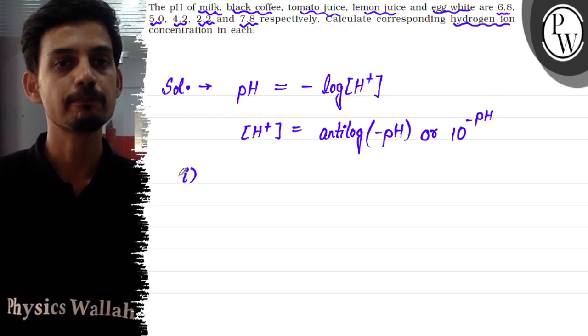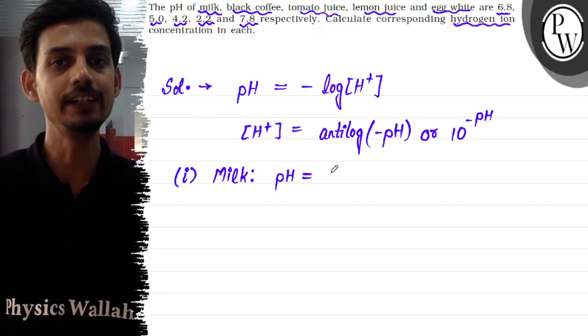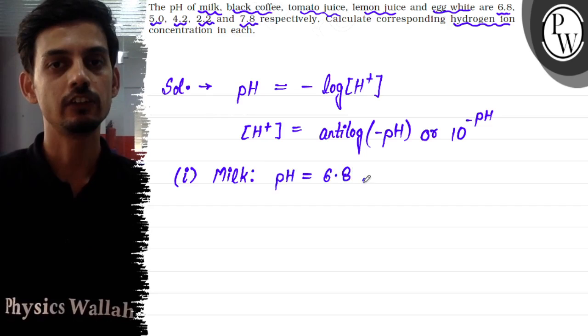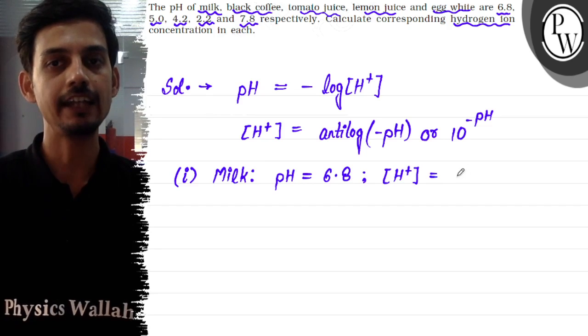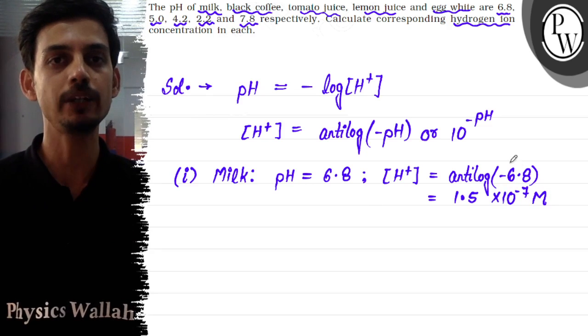Now let's see the first part. The pH of milk is given as 6.8. So the concentration of H+ ion will come out to be antilog of minus 6.8, which is 1.5 × 10^(-7) moles per liter. This is the antilog value of minus 6.8.